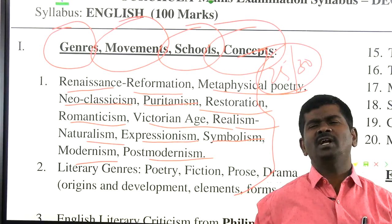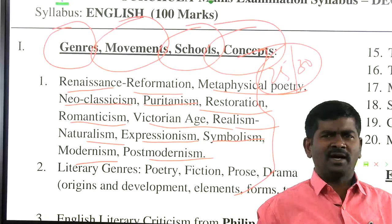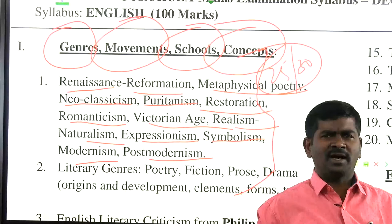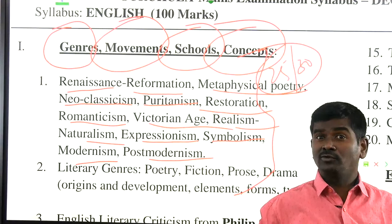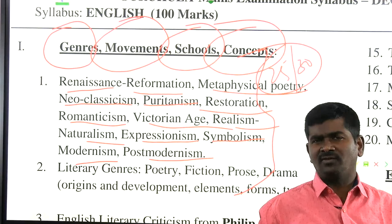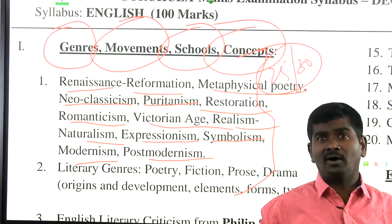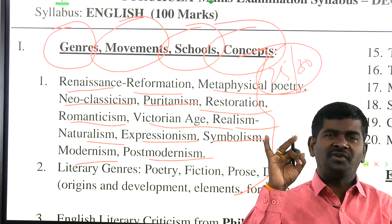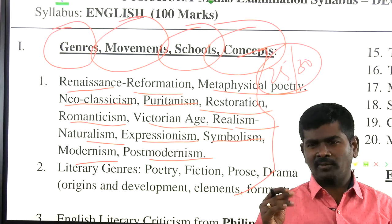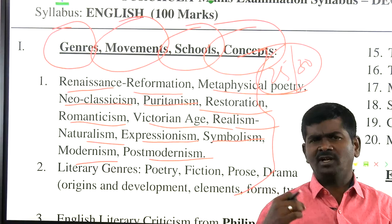In the 2017 APDL exam: 'Who is called the Morning Star of English Renaissance?' — Geoffrey Chaucer. 'Morning Star of English Reformation' — John Wycliffe. What is Renaissance? What are the schools — Scottish Chaucerians, University Wits, Metaphysical Poets, Cavalier Poets — four important schools of poetry. Scottish Chaucerians include King James, Robert Henryson, William Dunbar, Gavin Douglas, and David Lindsay.